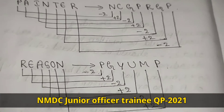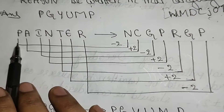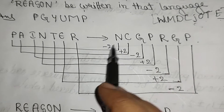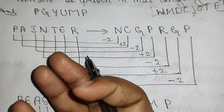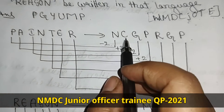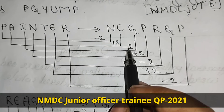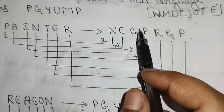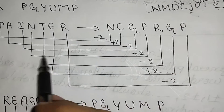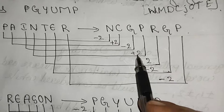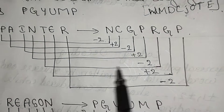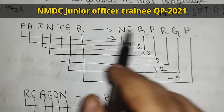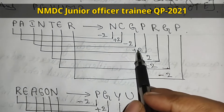Write down PAINTER and NCGPRGP and check the difference between the letters. P minus 2 gives N, A plus 2 gives C, I minus 2 gives G, N plus 2 gives P, T minus 2 gives R, E plus 2 gives G, R minus 2 gives P. So the pattern is: minus 2, plus 2, minus 2, plus 2 alternating.